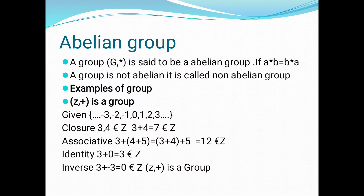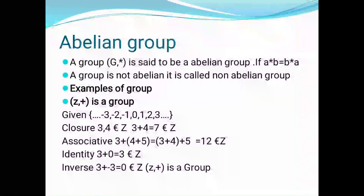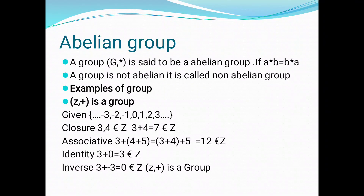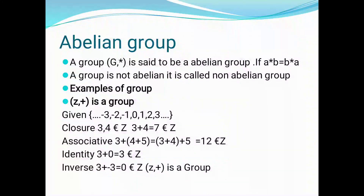Next, we see the examples of a group and abelian group. We are taking the set of all integers Z and using the binary operation addition. So (Z, +) is a group. Given the set Z = {..., -3, -2, -1, 0, 1, 2, 3, ...}, if all four conditions are satisfied, that set is said to be a group.